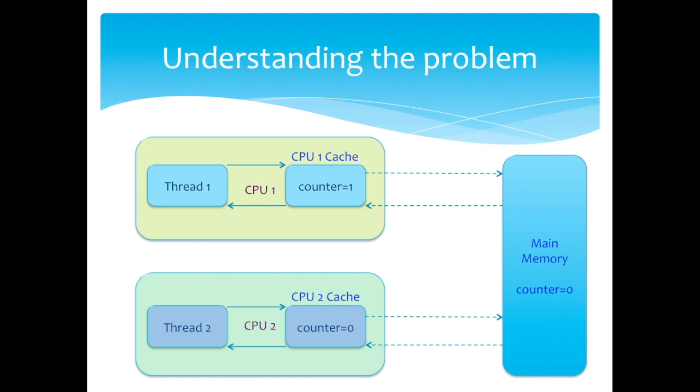Now imagine a situation where two threads tries to access a shared counter variable, which has been assigned 0. Imagine that thread 1 increments the counter variable. But both thread 1 and thread 2 may read the counter variable frequently. The problem with this normal counter variable is that it does not guarantee when the value is written from the CPU cache back to main memory.